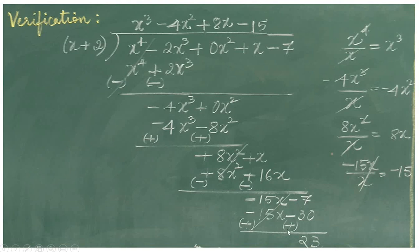So x plus 2 into minus 15 gives minus 15x minus 30. For subtraction, changing sign: minus 15x plus 15x cancel. Minus 7 plus 30 becomes plus 23, which is the remainder. So we verified that when x raise to 4 minus 2x cube plus x minus 7 is divided by x plus 2, 23 is the remainder.